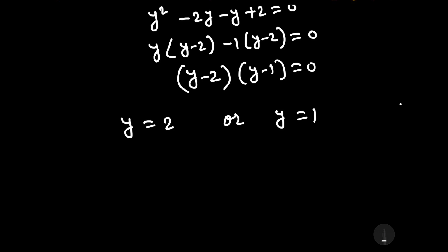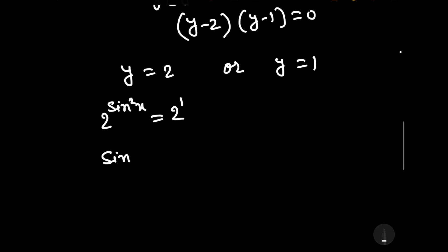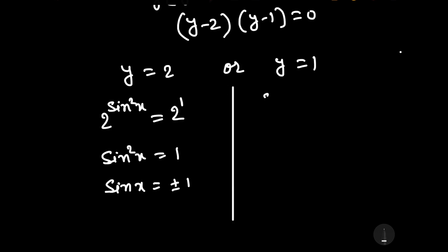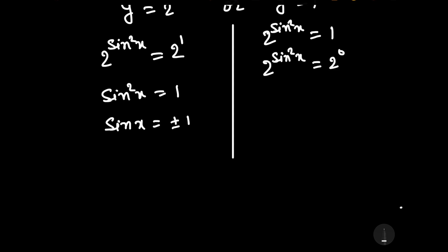We considered y as 2 to the power sin²x. From the first case, y equals 2 means 2 to the power sin²x equals 2 to the power 1, so sin²x equals 1, which means sin x equals plus or minus 1. From the second case, y equals 1 means 2 to the power sin²x equals 2 to the power 0, so by comparing, sin²x equals 0, meaning sin x equals 0.